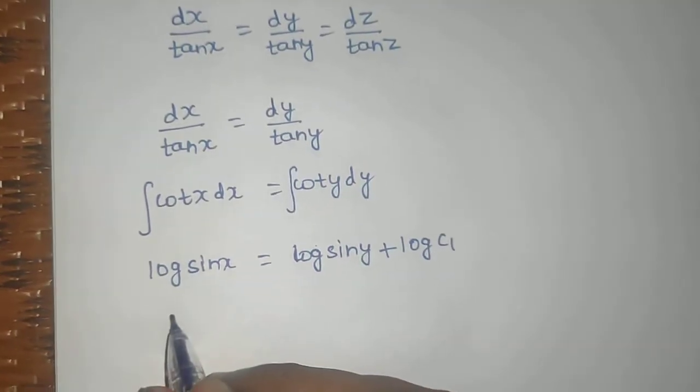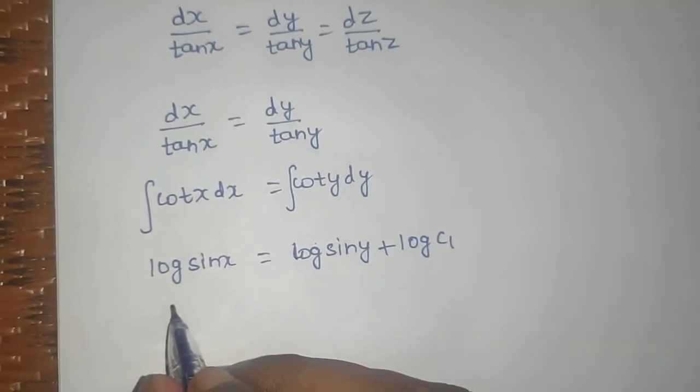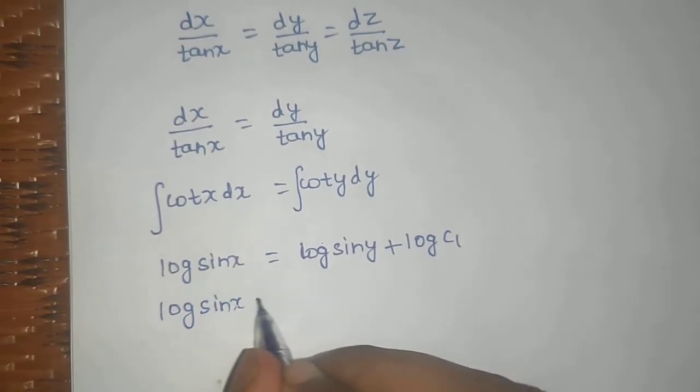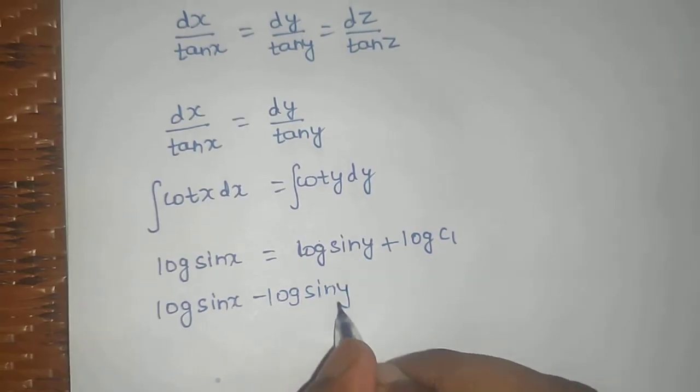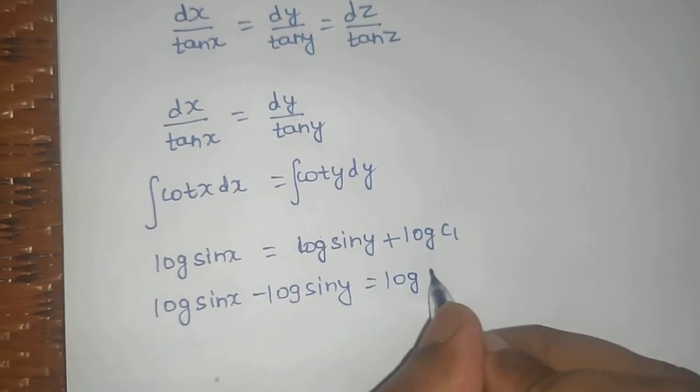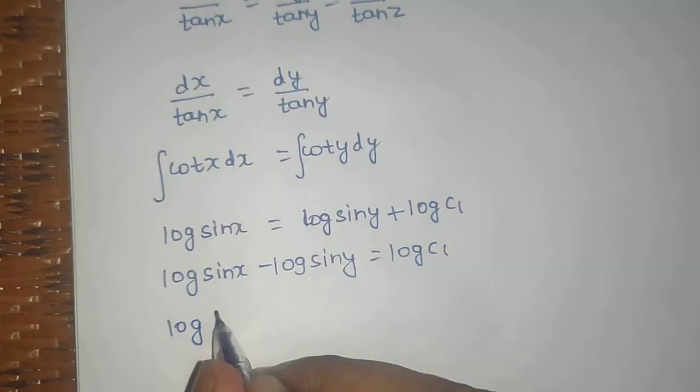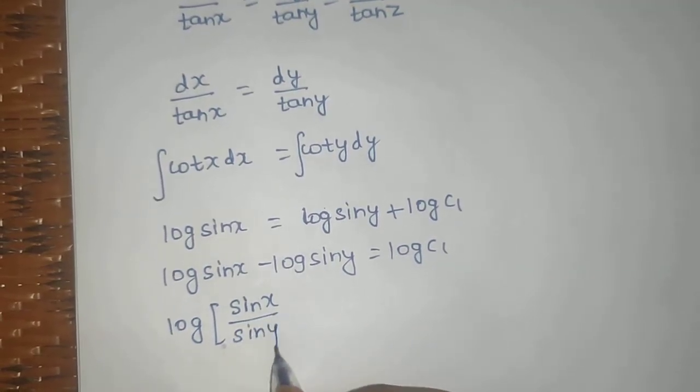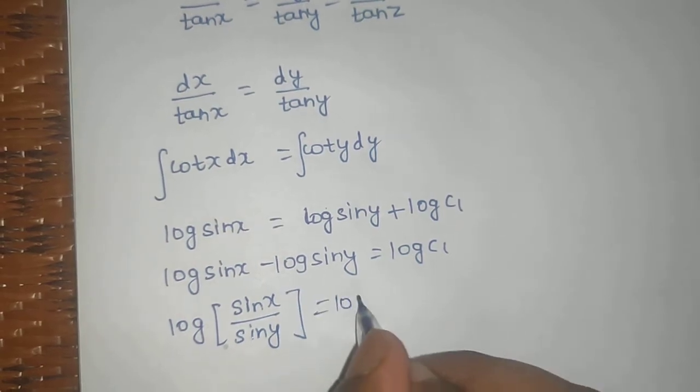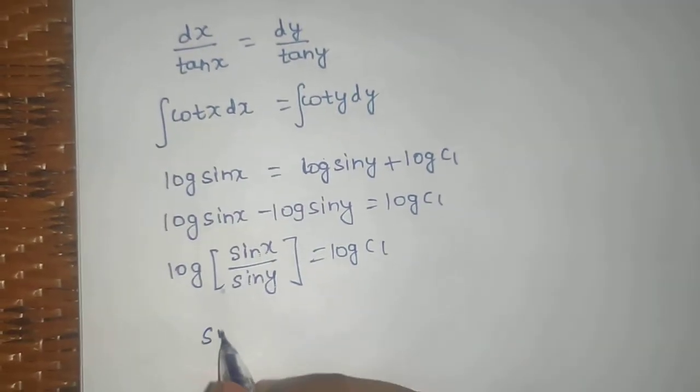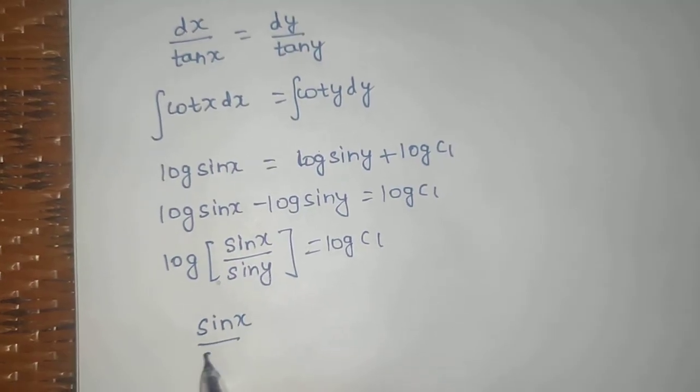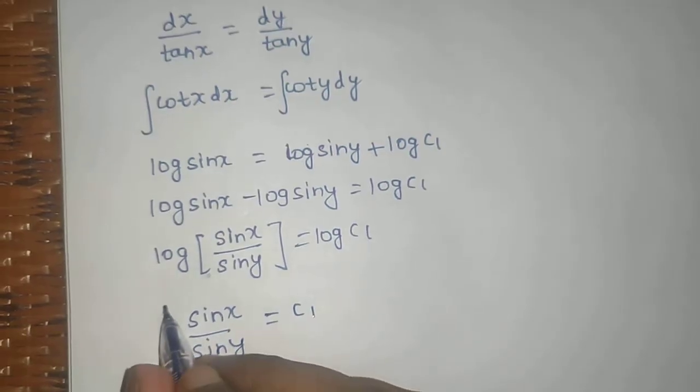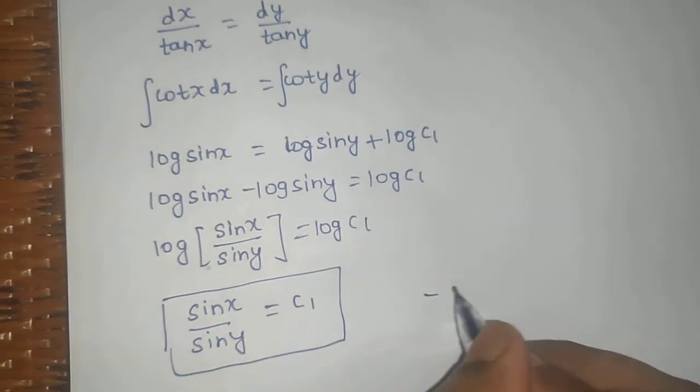From here you can say that log sin x minus log sin y equals to log c1. Using log a minus log b equals log a by b, we get log of sin x by sin y equals to log c1. If you remove log from both sides, you are getting sin x by sin y equals to c1. This is your first equation.